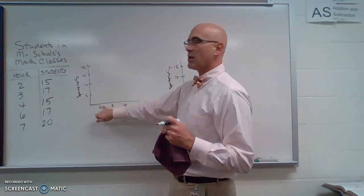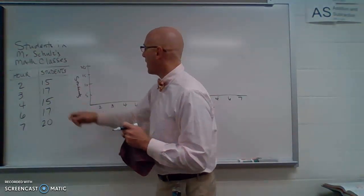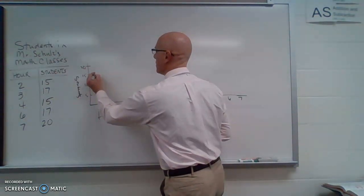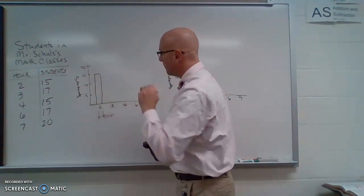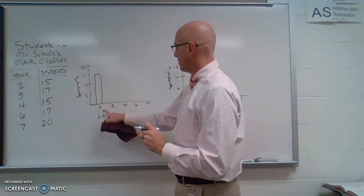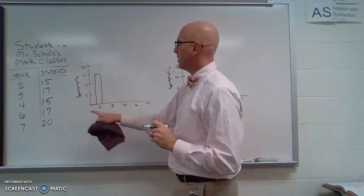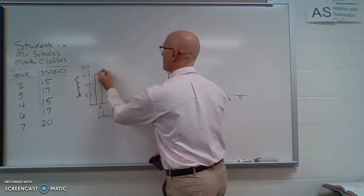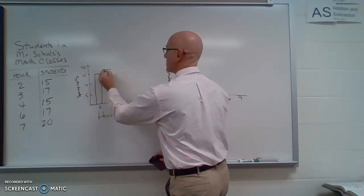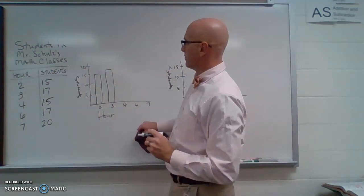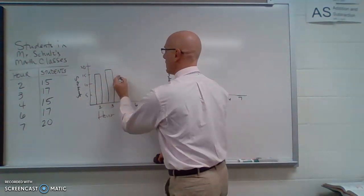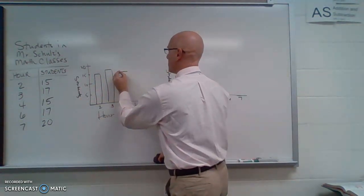So I can see here at 2nd period, I have 15 students. So I am going to create a bar at 2nd hour that goes up to 15. 3rd hour, I have 17, so I'm going to just approximate that height. 4th period, I have 15 students again.